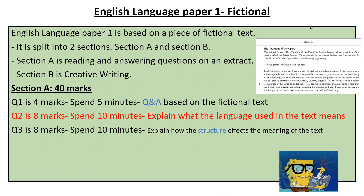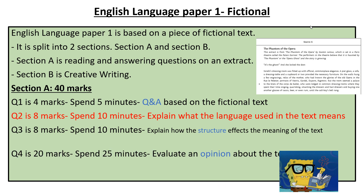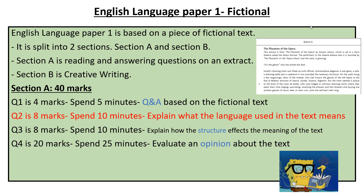Question 3 is an eight-mark question where you're asked to explain how the structure affects the meaning of the text, and I recommend you spend ten minutes on this. Question 4 is a big one — it's 20 marks and you're asked to evaluate an opinion about the text. You're recommended to spend about 25 minutes on this. Each of these questions is the same for every single exam, so if you learn how to do these questions, you can replicate that approach for any fictional text you get.